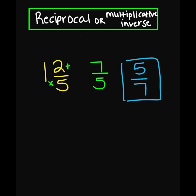Let's check our work to make sure. You're going to do 7 over 5 times 5 over 7. In the numerator, 7 times 5 is 35. In the denominator, 5 times 7 is also 35. So 35 divided by 35 equals 1, so we know that 5 over 7 is the correct answer.